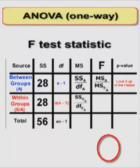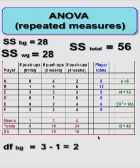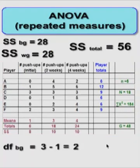Got the sum of squares. Now we need to look at the degrees of freedom. Degrees of freedom between groups, same way as always. You take the number of different groups, and that is the initial push-ups, two weeks training, four weeks training. So there's three groups minus one, so there's two degrees of freedom between groups.